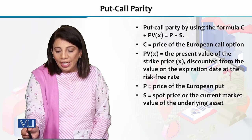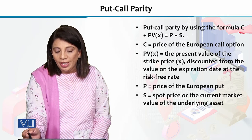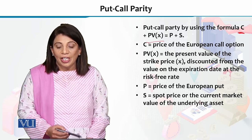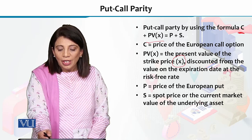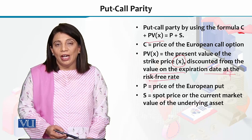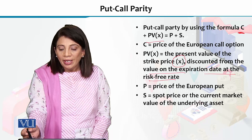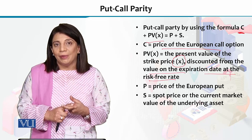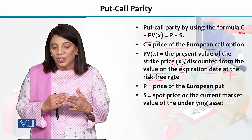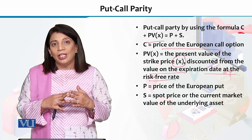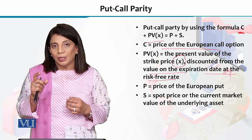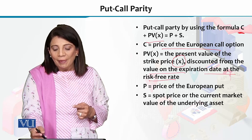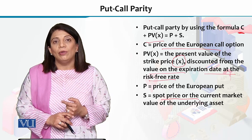Looking at the symbols: C is the price of the European call option, and the present value of X means the present value of the strike price, discounted from the value on the expiration date at the risk-free rate. On the right-hand side, P is the price of the put option, and S is the spot price — the current market value of the underlying asset.